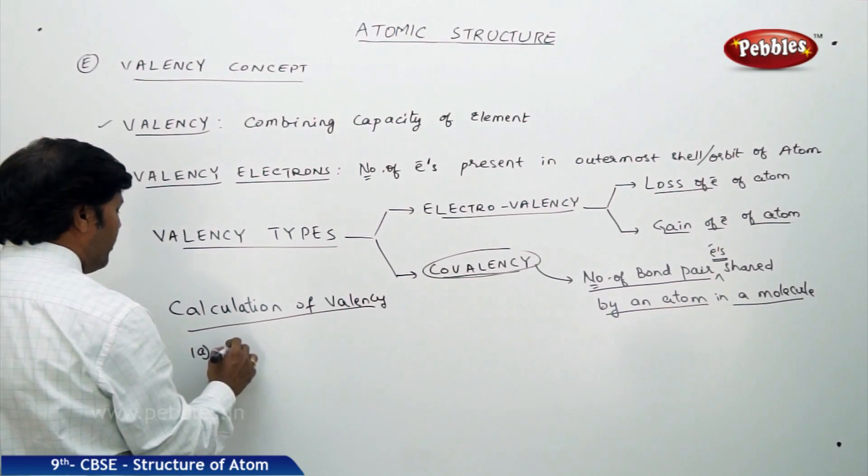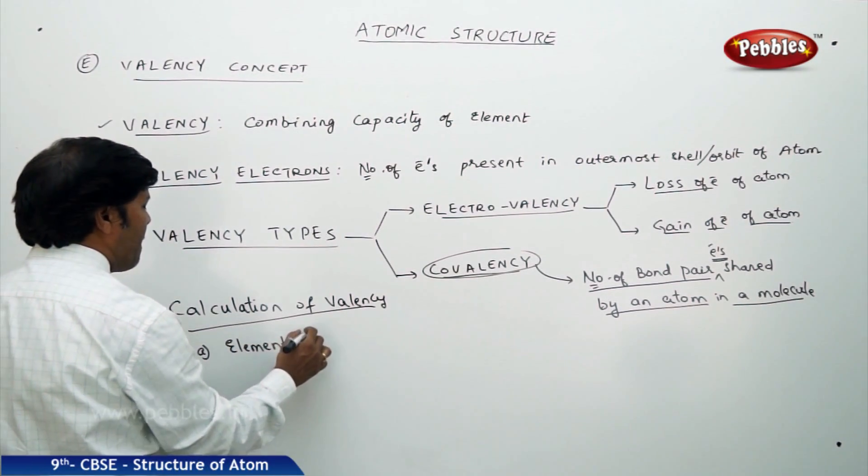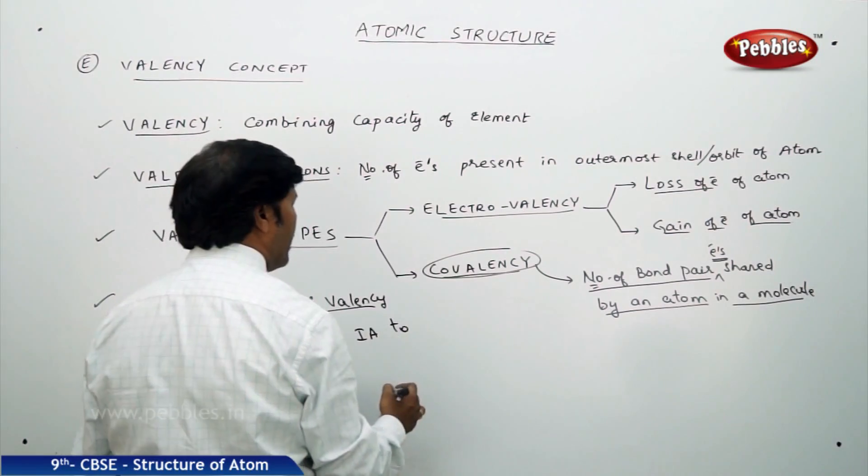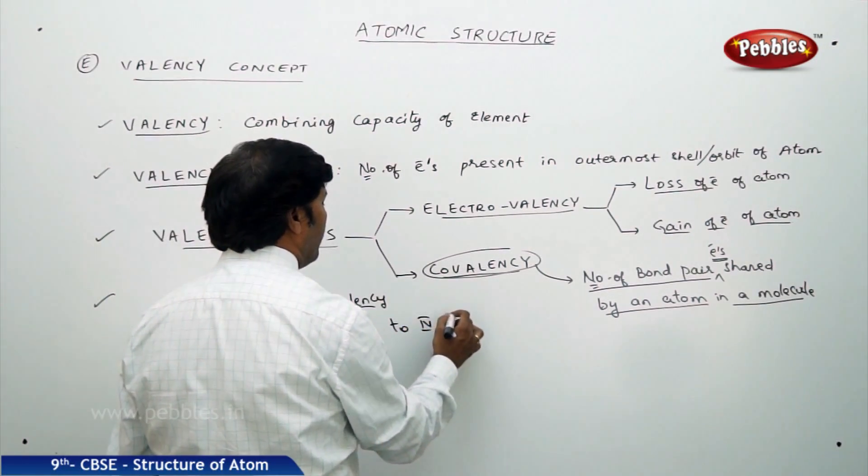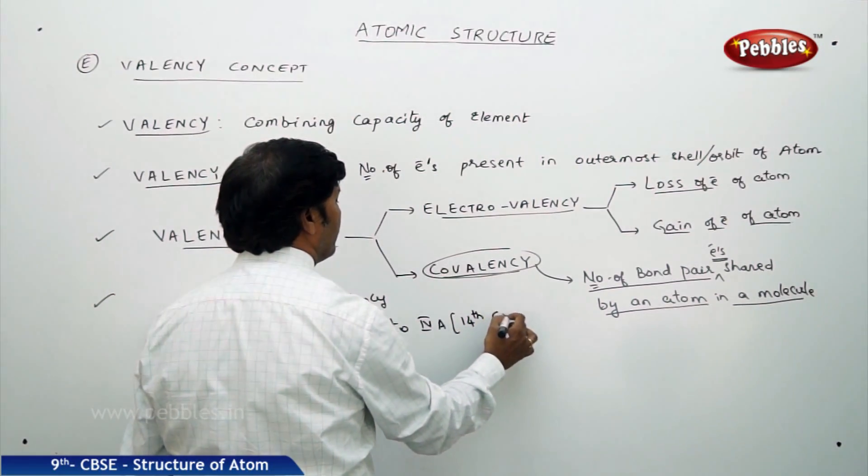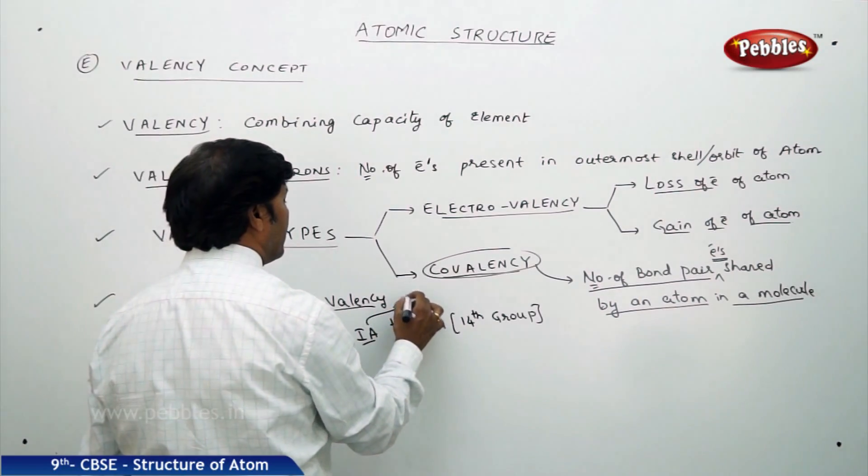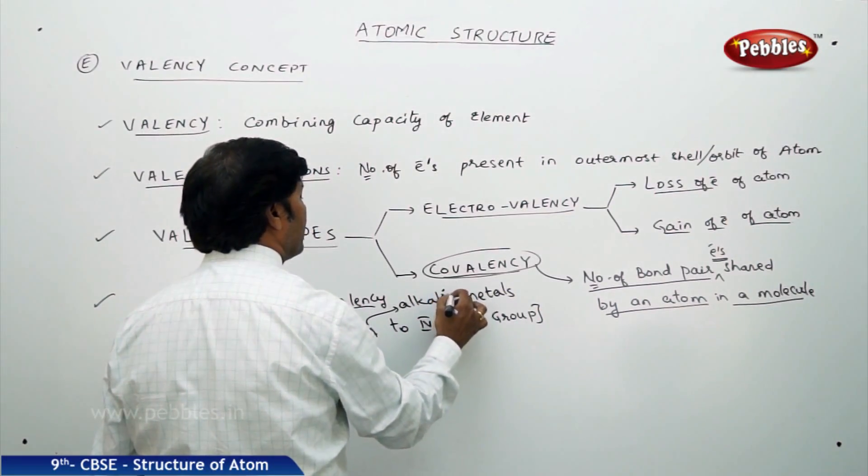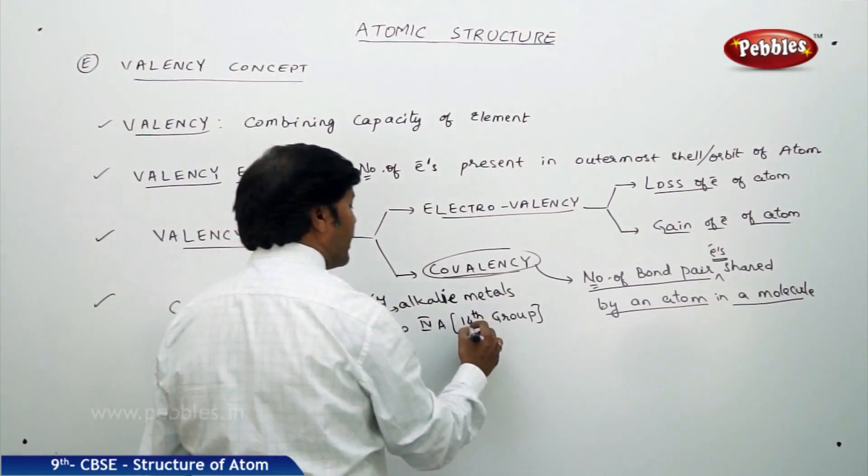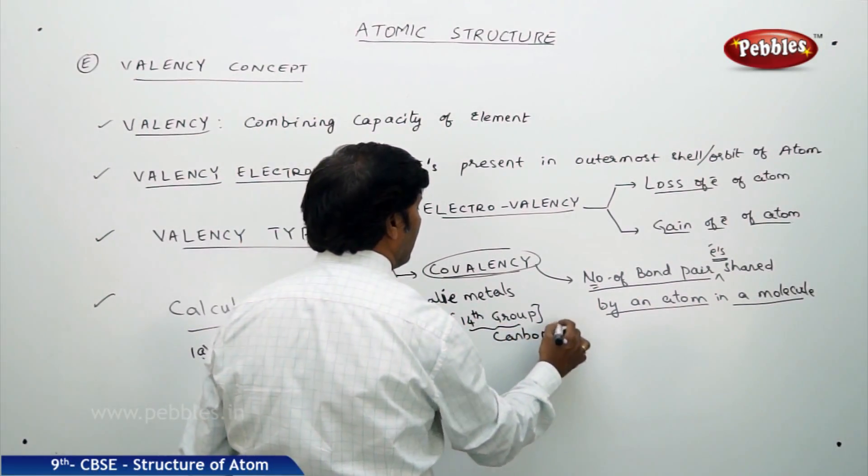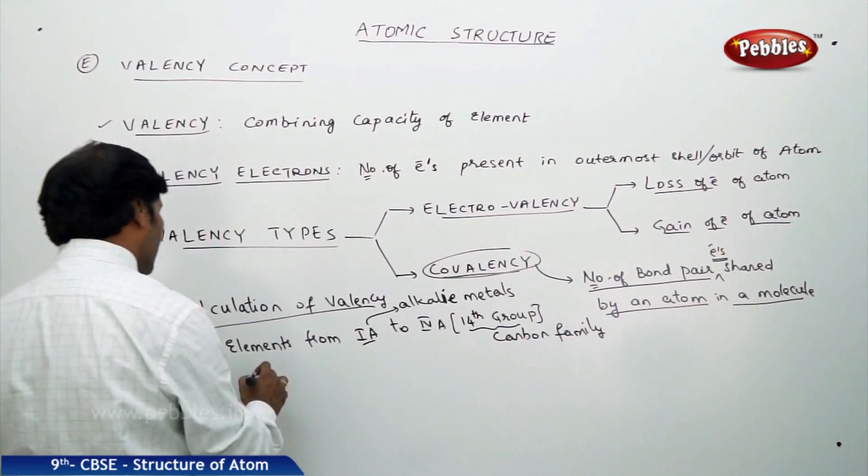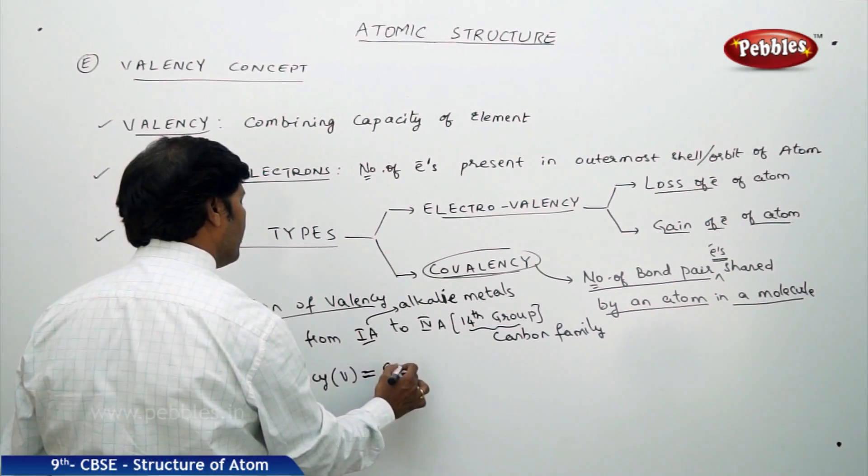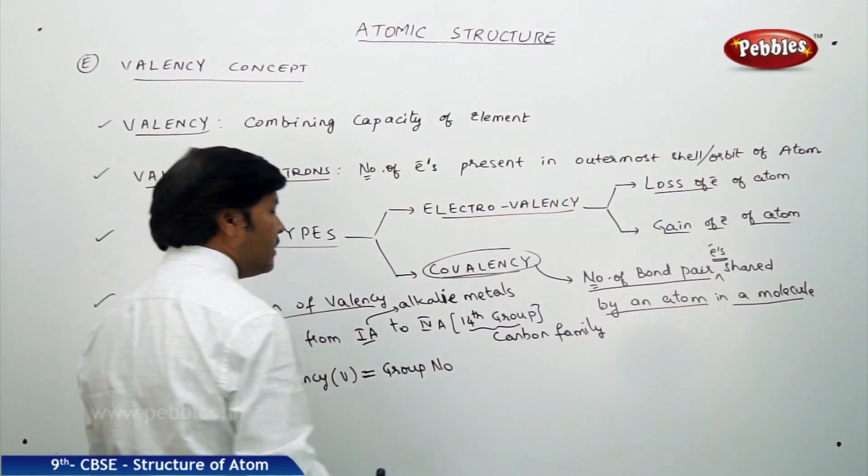You can use one for elements from 1A up to 4A, 4A means 14th group, 1A means alkali metals. From alkali metals to 14th group that is carbon family, we can directly use the formula valency V is equal to its group number.